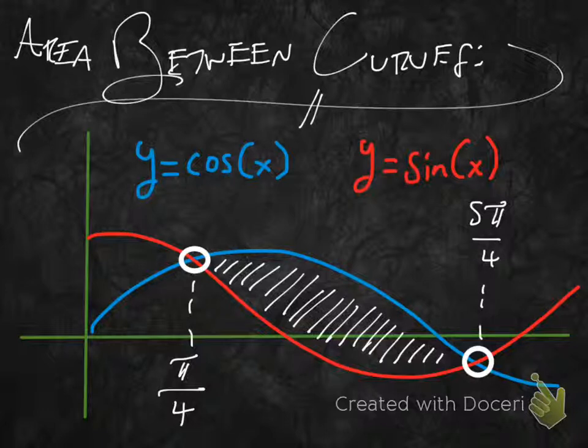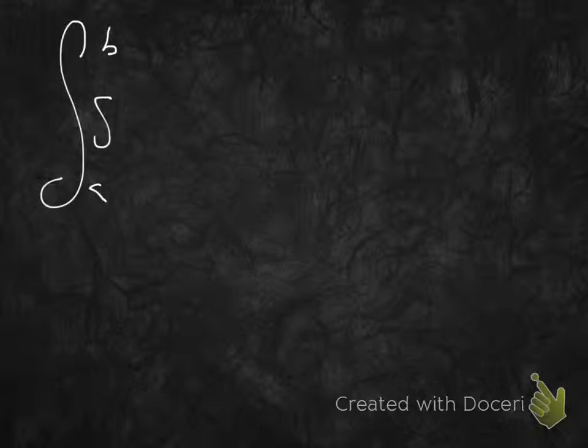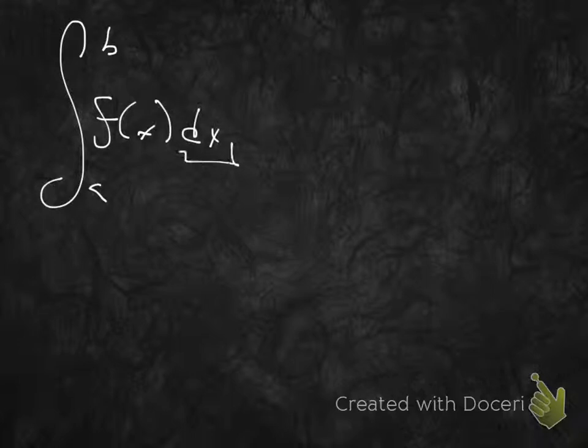The first thing we need to do is recognize all of our parts and values, then set up a definite integral. A definite integral tells us it's an integral over some interval a to b of some function to some variable of integration. It's going to spit out area — how much area is on a function between a and b.